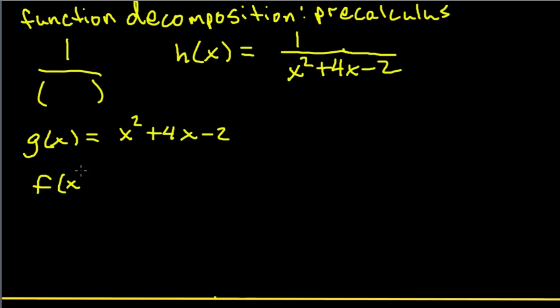g(x) is going to be what's in the denominator. And f(x), we do the same thing as before. Just put your finger over this x squared plus 4x minus 2 and put an x there, and we get 1 over x. And that's as simple as it is.